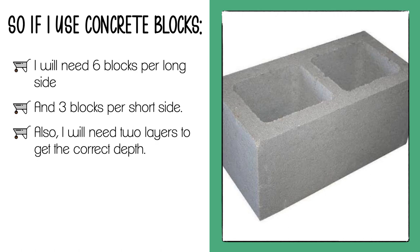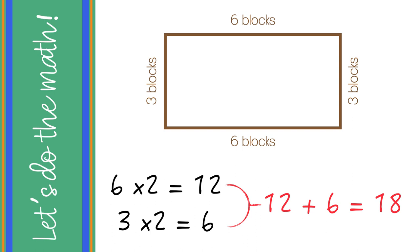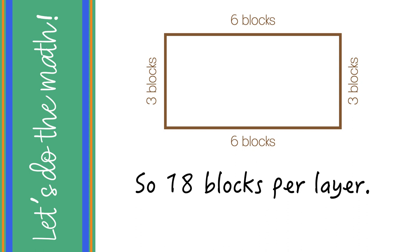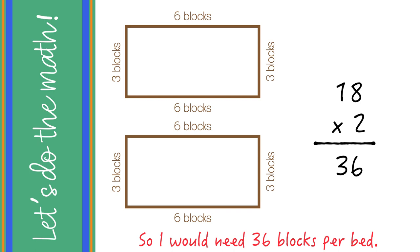So if I use concrete blocks, I need six blocks per long side, three blocks per short side, and two layers to get the correct depth. How many blocks total is that? Six times two is 12; three times two is six. 12 plus six equals 18 blocks per layer. I need two layers, so 18 times two gives me 36 blocks per bed.